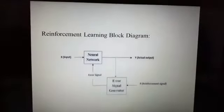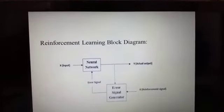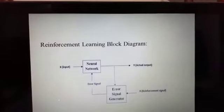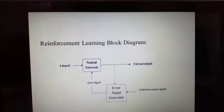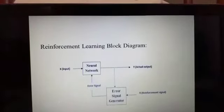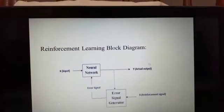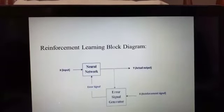This is a simple block diagram for reinforcement learning. External reinforcement signals are the procedure in critic signal generator, and critic signals are sent to the ANN for adjustment of weights properly so that to get better critic feedback in future.